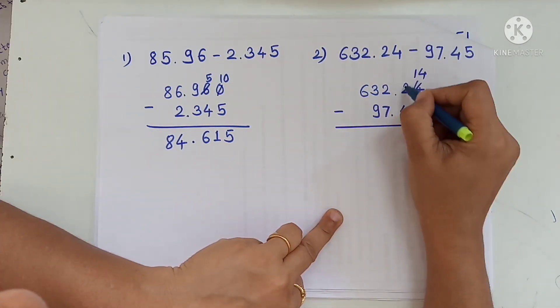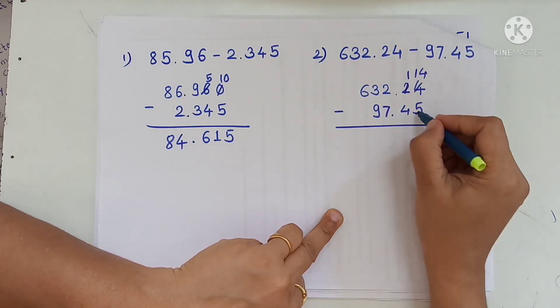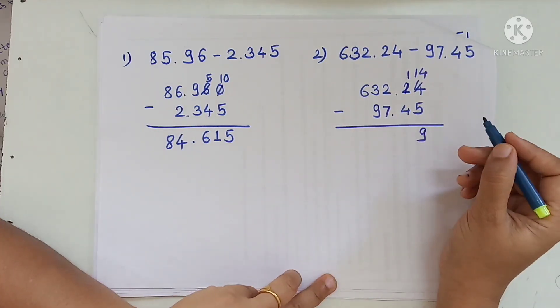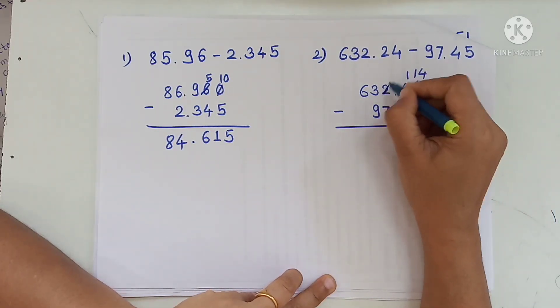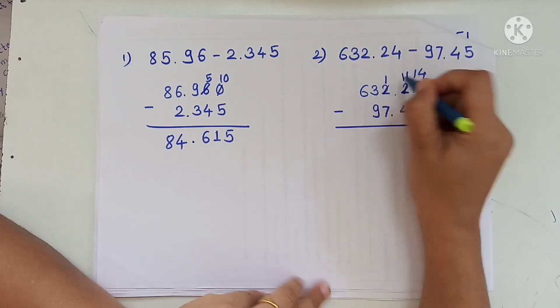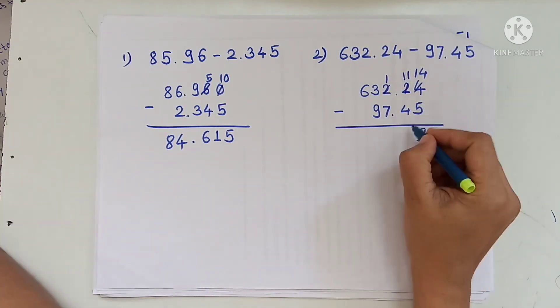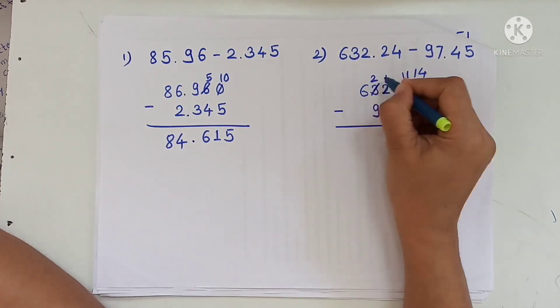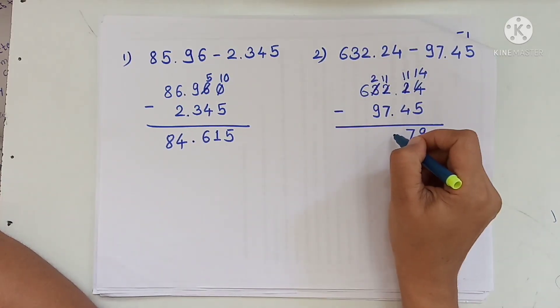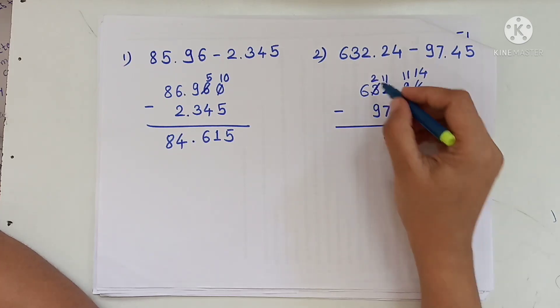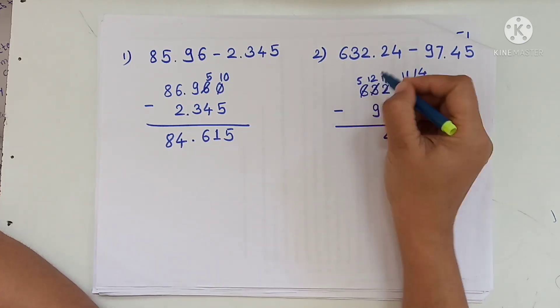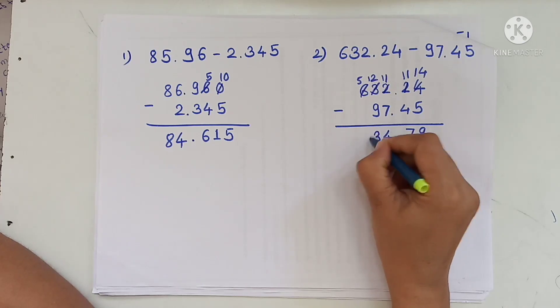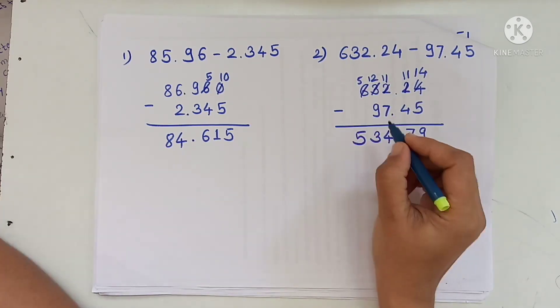We need 14 here, carry 1. 14 minus 5 is 9. Borrow 1 from here, making it 11. 11 minus 4 is 7. Point. 11 minus 7 is 4. 12 minus 9 is 3. And 5 stays as it is.